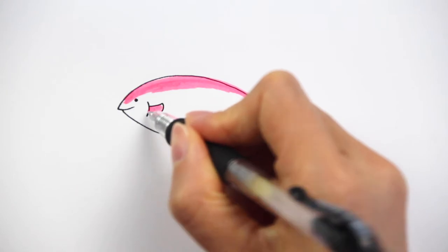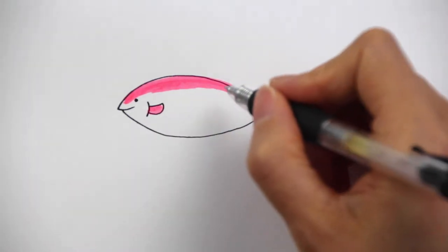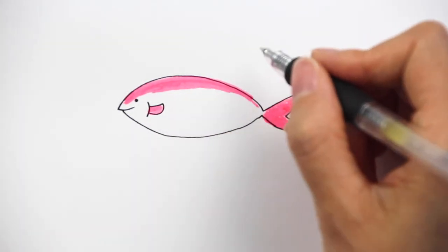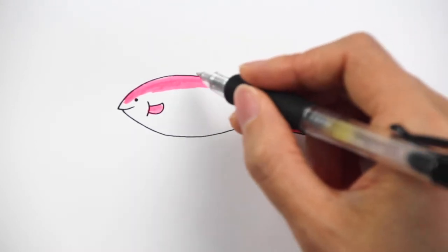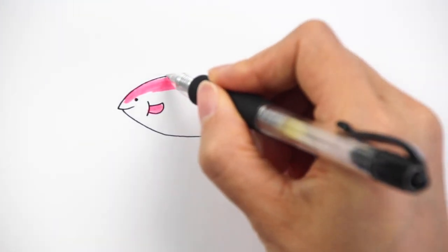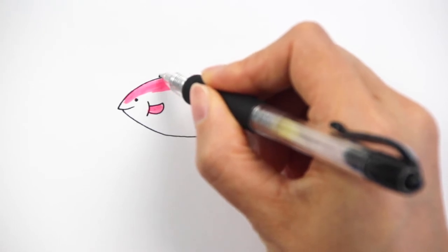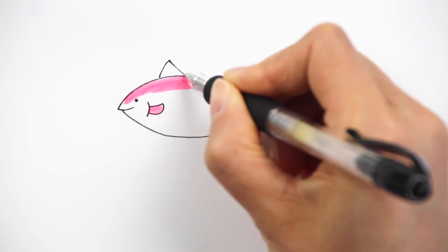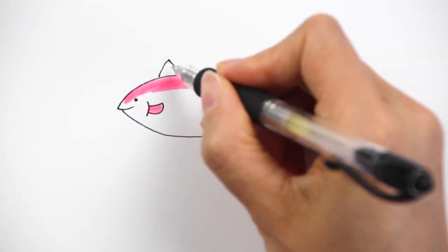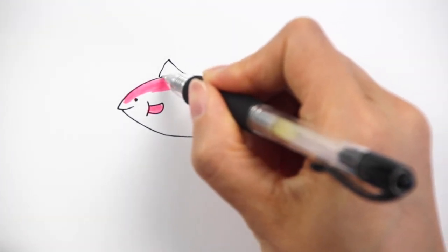And here we're going to add a little outline for this fin. Besides this part, there's three like four other fins as well. The first fin is on the top, it's quite big like this. This is the first fin, and we're also going to add lines like this.